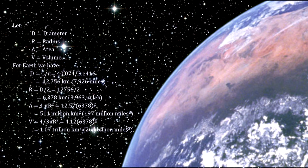The surface area is 4 times the radius squared times pi. That's 511 million square kilometers. And the volume is 4 thirds the radius cubed times pi. That's 1.07 trillion cubic kilometers.